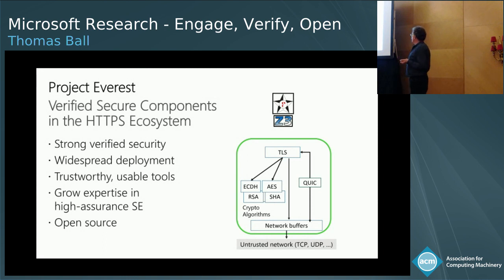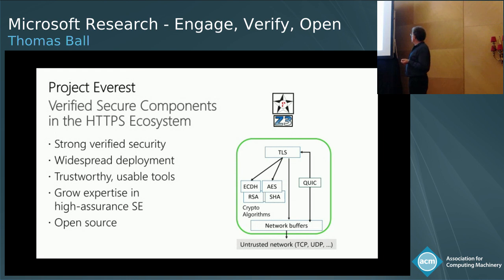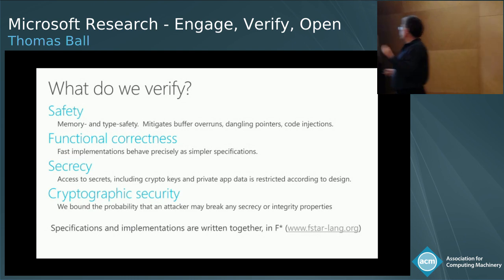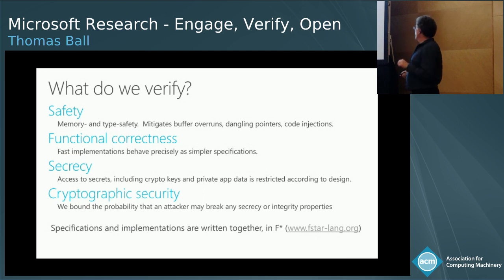We want strong verified security and widespread deployment — not just a verified component, but efficient code. We want trustworthy, usable tools and to grow expertise in Microsoft and industry in high-assurance software engineering, all open source. This is based on work in Cambridge and Redmond on F7 and now the F* language, which is a higher-order dependently typed language that makes use of Z3 during type checking. The project looks at properties from basic memory safety and type safety, to functional correctness, to secrecy, and cryptographic security.